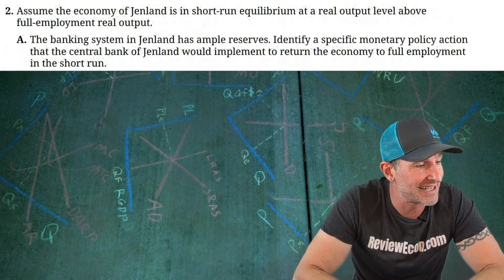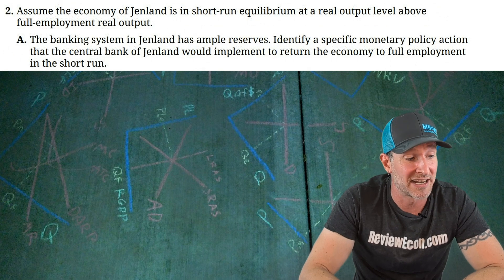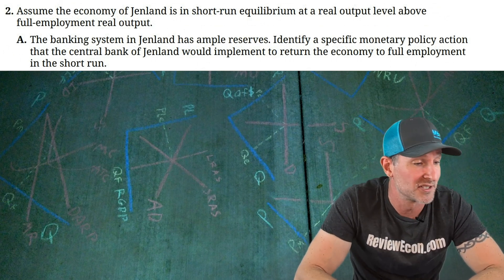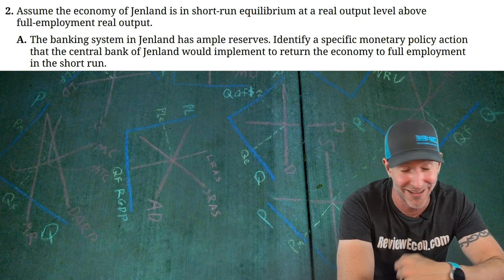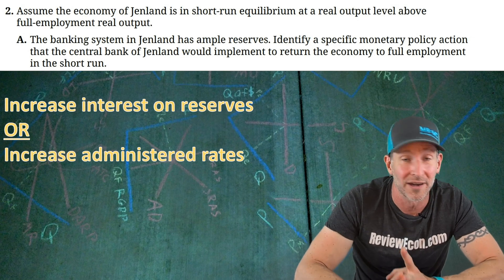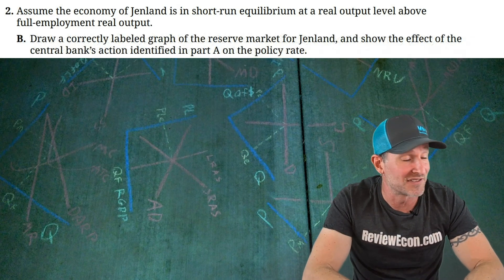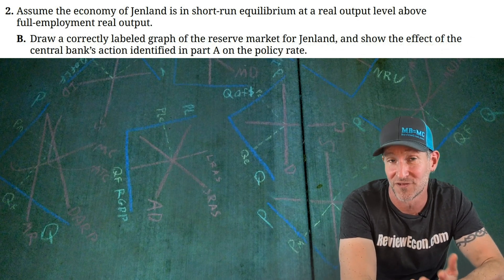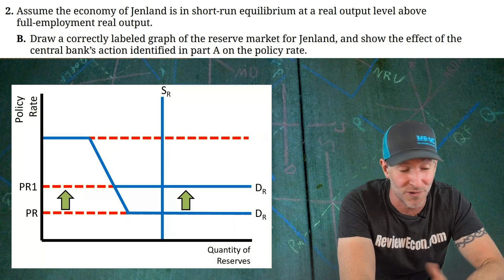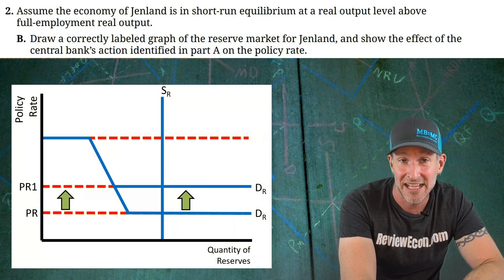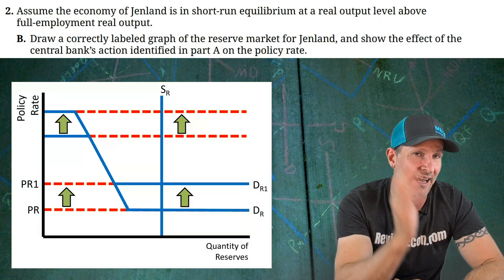On to question number 2. GenLand is in short-run equilibrium with real output above the full employment level. The banking system in GenLand operates under ample reserves. Part A asks for a specific monetary policy action the central bank would implement to return to full employment. Under ample reserves, you could either increase interest on reserves or increase administered rates — one of those administered rates is interest on reserves — and either answer will work. For Part B, we draw the reserves market graph showing the impact of that central bank action on the policy rate. The Y-axis is labeled policy rate, the X-axis quantity of reserves, and the supply of reserves must be vertical. You can shift the bottom portion of the demand curve up if you said increase interest on reserves; if you said increase administered rates, also shift the top portion.